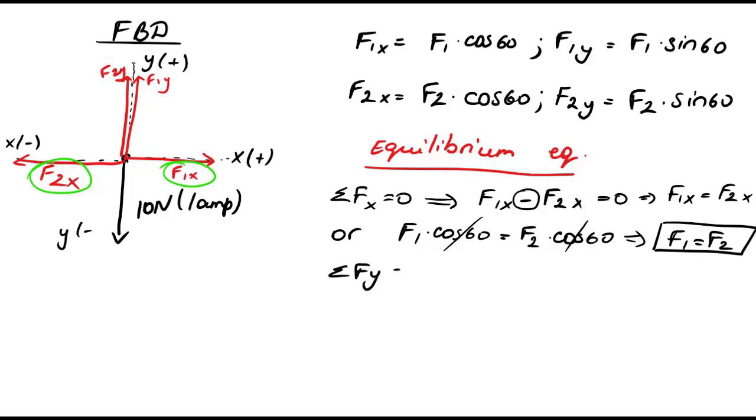Then write equilibrium equation for y direction. We have three forces in total in y direction, F1y, F2y and weight of the lamp. F1y and F2y are positive, hence they point upwards.